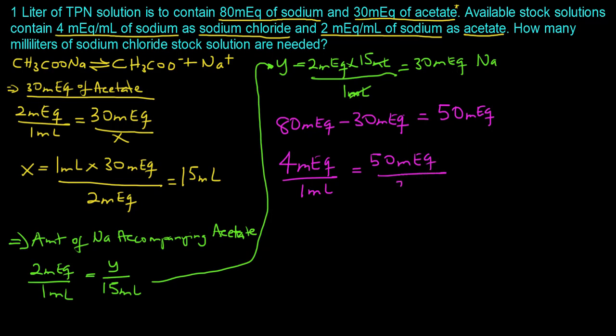From there the concentration is basically 4 mEq in 1 mL and we want to supply 50 mEq, and so we will solve for our unknown, so we call that Z.